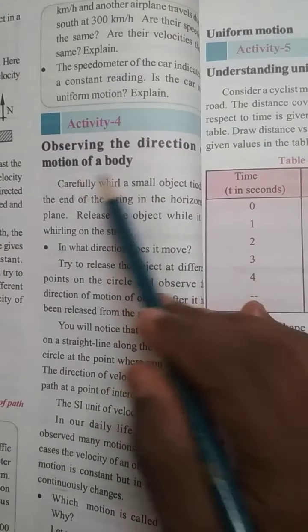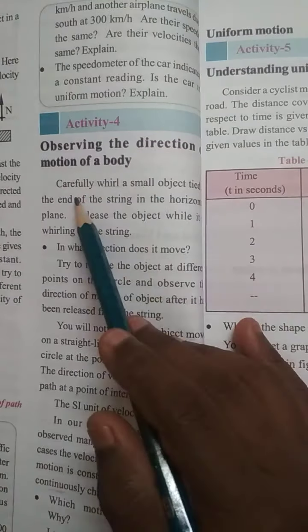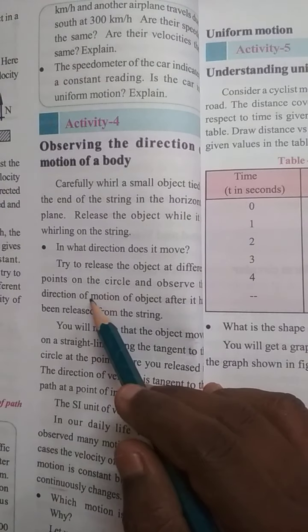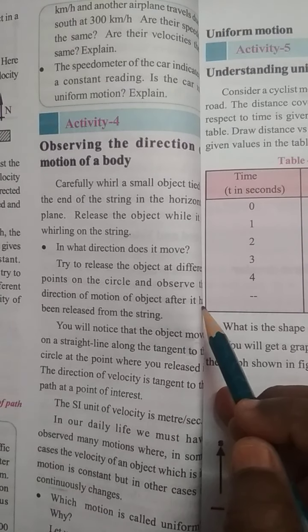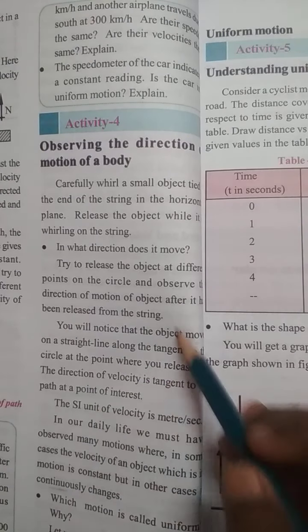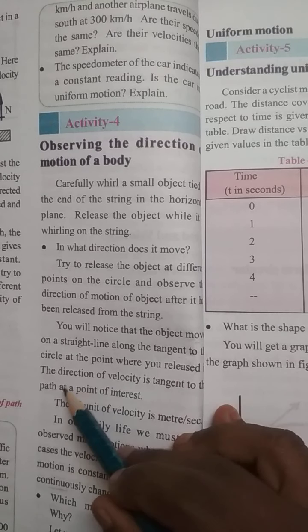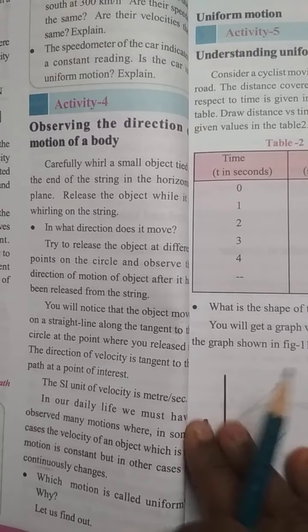Next one is observing the direction of motion of a body. Carefully whirl a small object tied at the end of a string in a horizontal plane. Release the object while it is whirling on the string. Try to release the object at different points on the circle and observe the direction of motion of object after it has been released from the string. You will notice that the object moves on a straight line along the tangent to the circle at the point where you released.